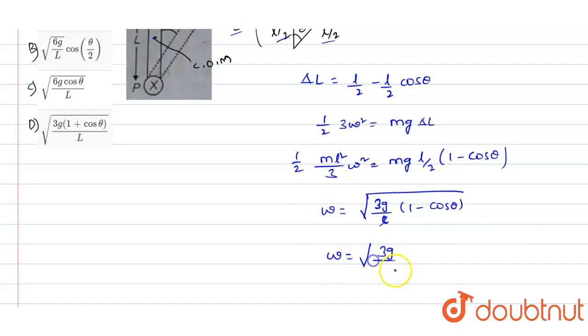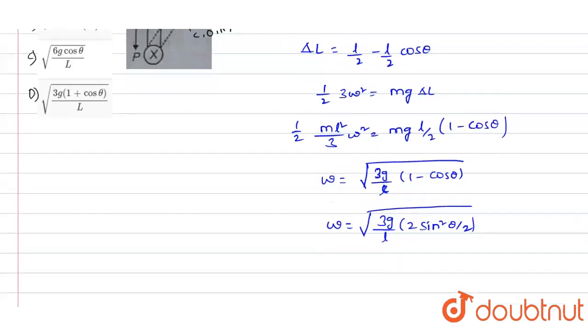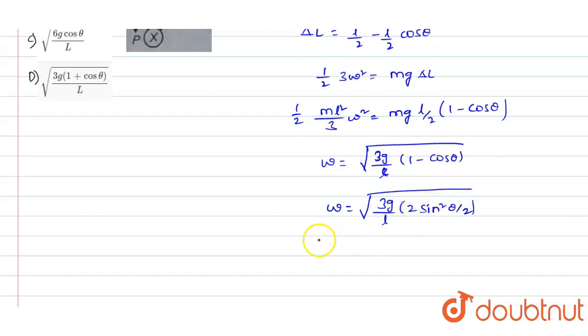Omega value will be equals to √(3g/L × (1 - cos θ)). We can write it as 2 × sin²(θ/2), so we have formula for this in mathematics.